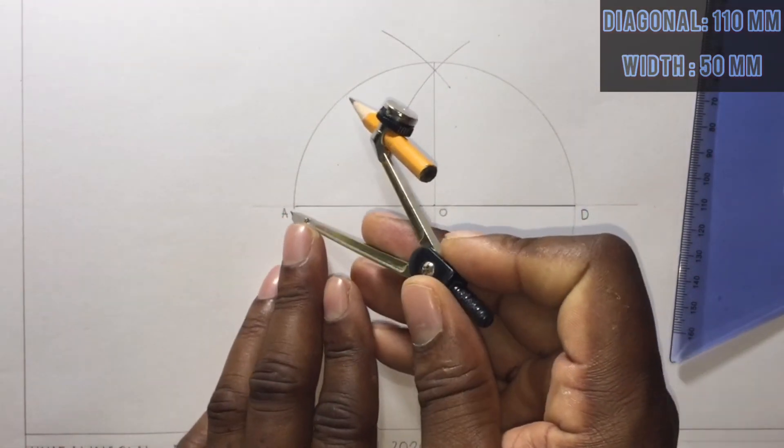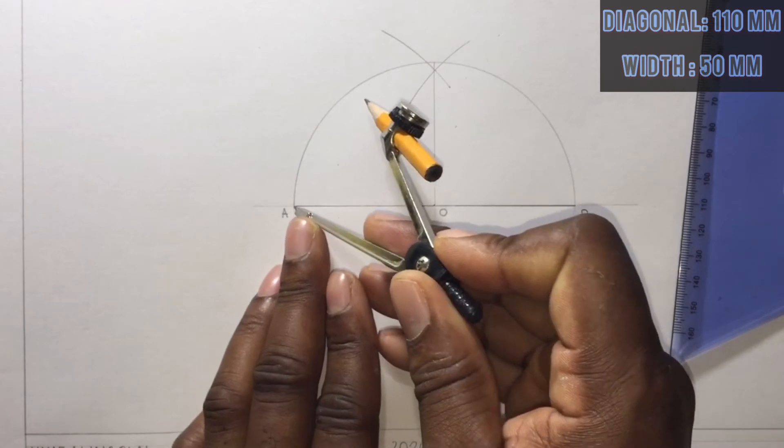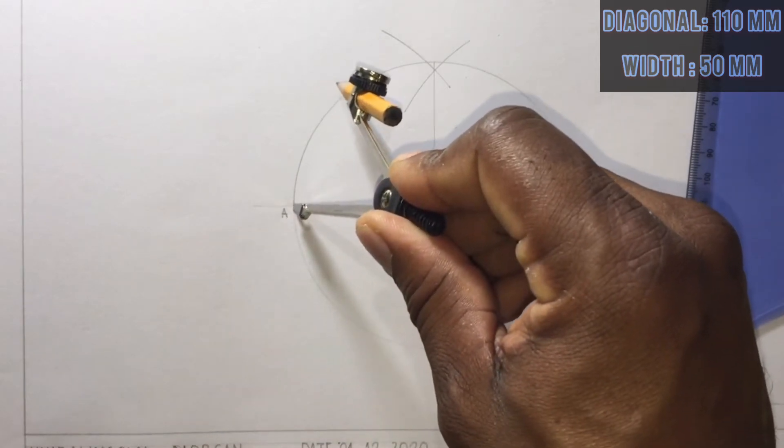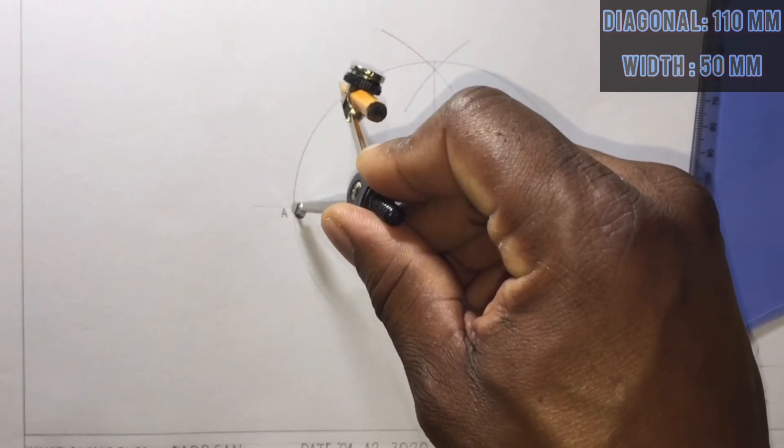My compass will now be placed at A, and I will swing an arc to cut the circle above the line AD.